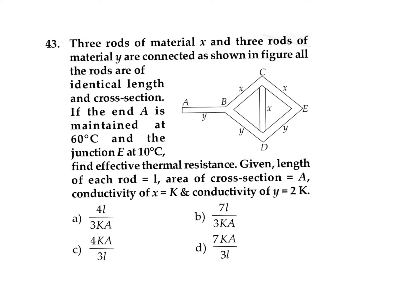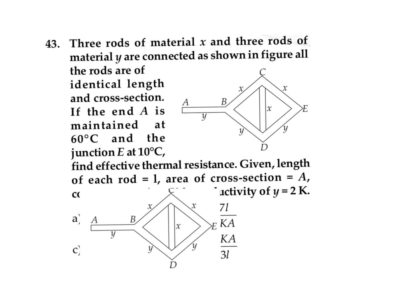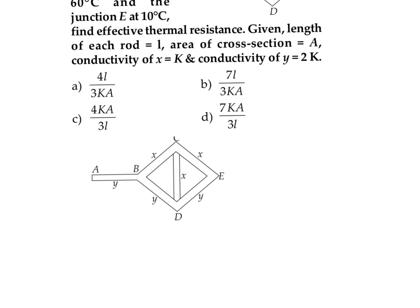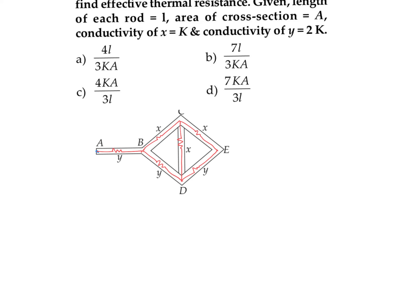We need to find the effective resistance between point A and E. For calculation purposes, it is better to consider these conductors as resistors. We can use the concept of current electricity, considering them as normal resistors, to find out the answer.